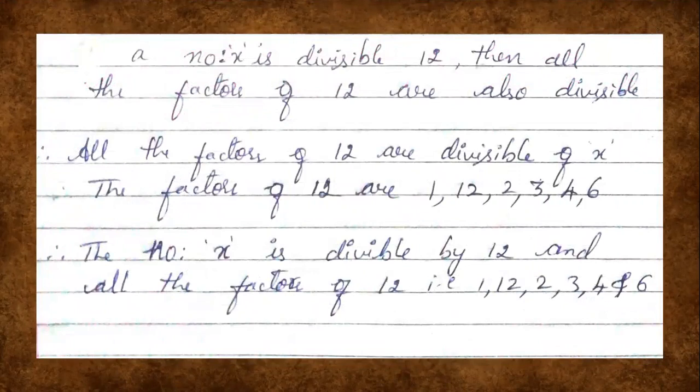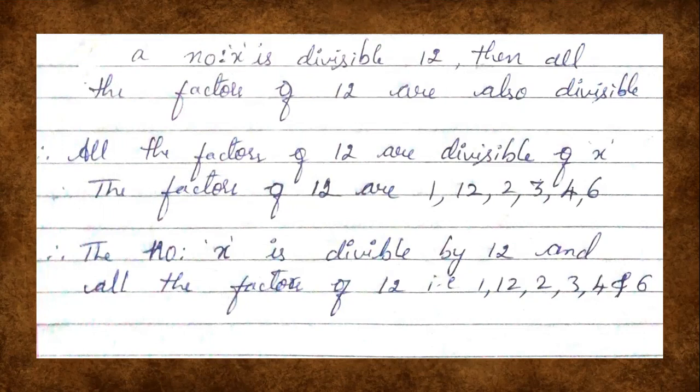A number x is divisible by 12, so all the factors of 12 are also divisors of x. The factors of 12 are 1, 2, 3, 4, 6, and 12. In the 1-times table 12 comes, in the 2-times table 12 comes, in the 3-times table 12 comes, in the 4-times table 12 comes, and in the 6-times table 12 comes. So 1, 2, 3, 4, 6, and 12 are the factors of 12.